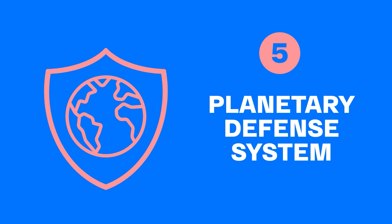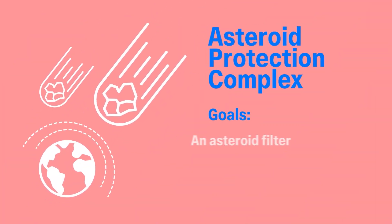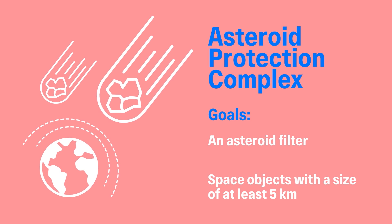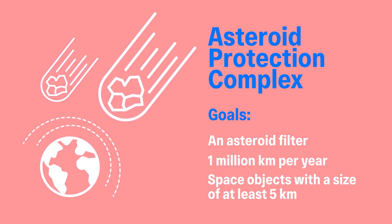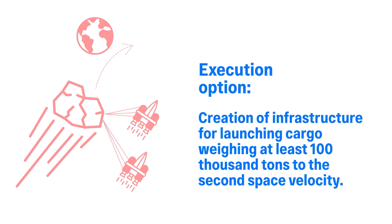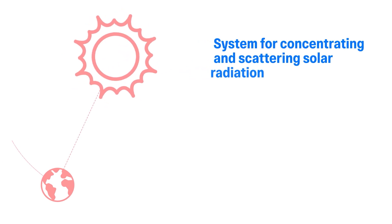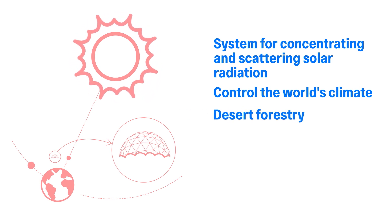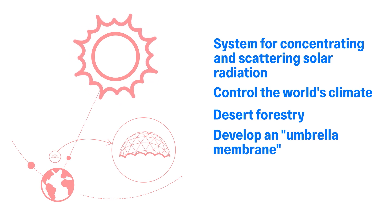Planetary Defense System — Asteroid Protection Complex. Goal: to have equipment and an asteroid deflector for the deviation of space objects with a size of at least 5 km, at a distance of at least 1 million km per year from its original trajectory. Execution option: creation of infrastructure for long-chain cargo weighing at least 100,000 tons to the second space velocity. System for concentrating and scattering solar radiation to control the world's climate and avoid natural disasters such as hurricanes, rainstorms, tornadoes, and typhoons. Execution option: develop an umbrella membrane at Lagrange point L1 that can obscure or scatter 3% of solar radiation.